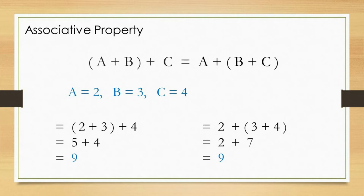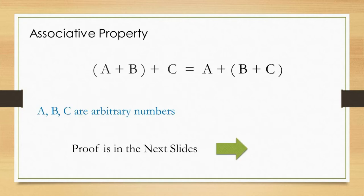This is a demonstration of the associative property in addition. The question is whether or not such associative property is preserved in any numbers or arbitrary numbers, and not limited to particular numbers. As far as the conclusion is concerned, the answer is yes. The associative property is preserved in any numbers or arbitrary numbers. The proof of this property will be provided in the next slides.